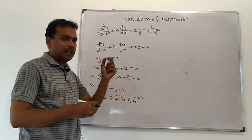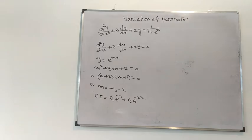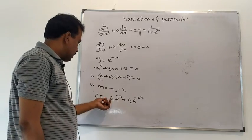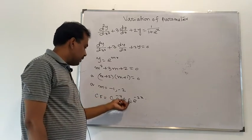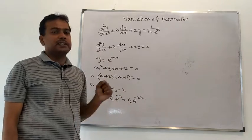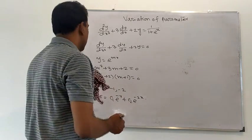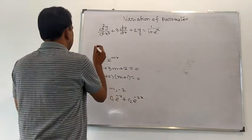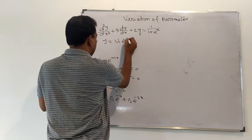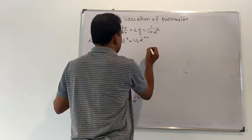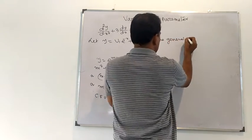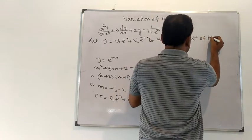So the complementary function contains arbitrary constants c1 and c2. In the variation of parameters method, we replace these constants by functions of x: c1 is replaced by v1 and c2 is replaced by v2. We then suppose the general solution is y = v1·e^(−x) + v2·e^(−2x).